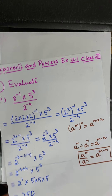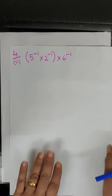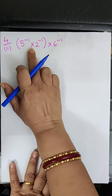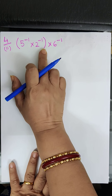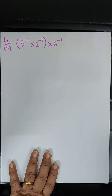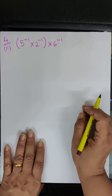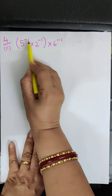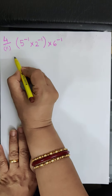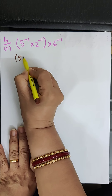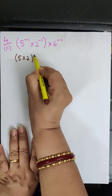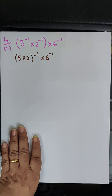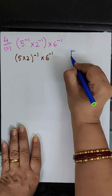Now we come to the second part. The second part of this question is: 5 to the power minus 1 into 2 to the power minus 1, whole bracket, into 6 to the power minus 1. Here the bases are different but the powers are the same, so we can write it as 5 into 2, raised to the power minus 1, into 6 to the power minus 1. We use the law here.